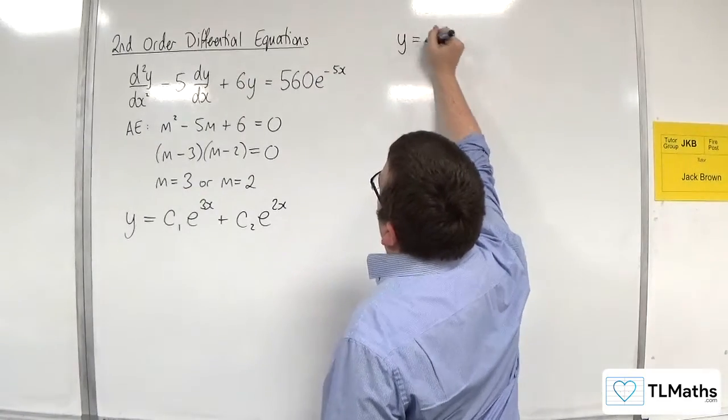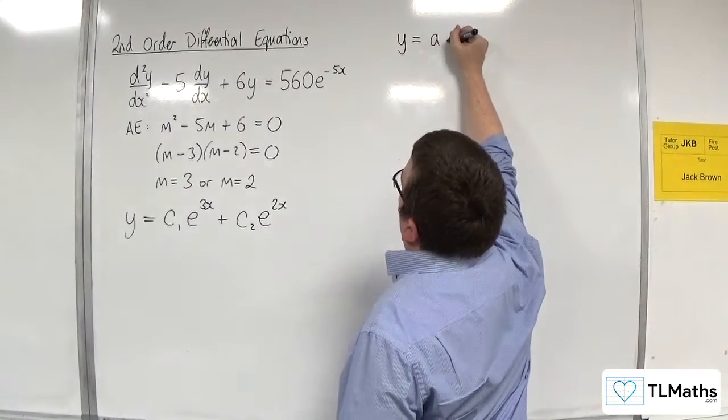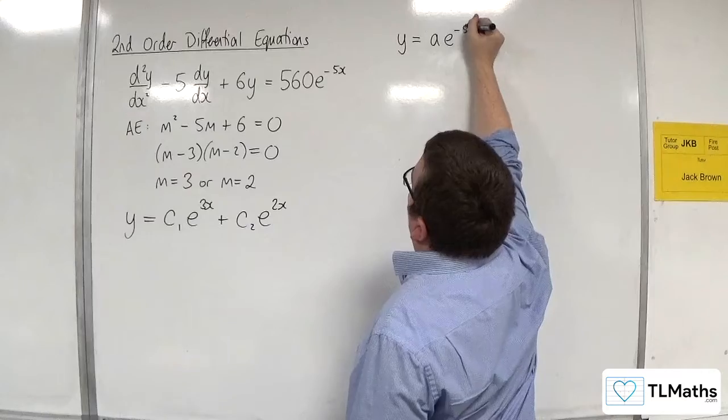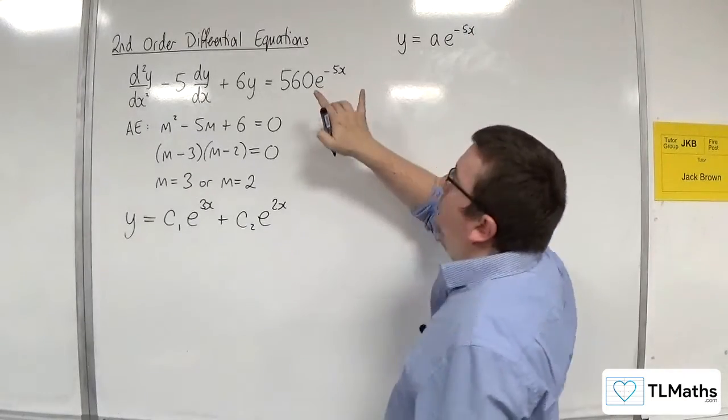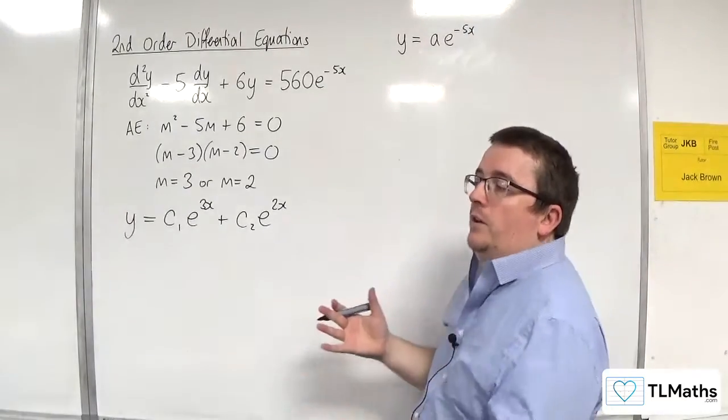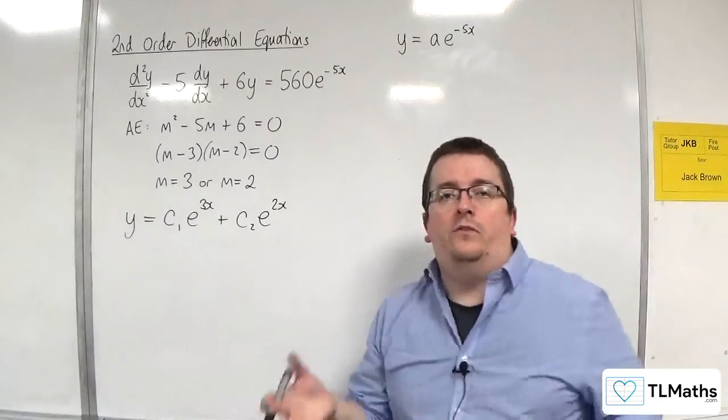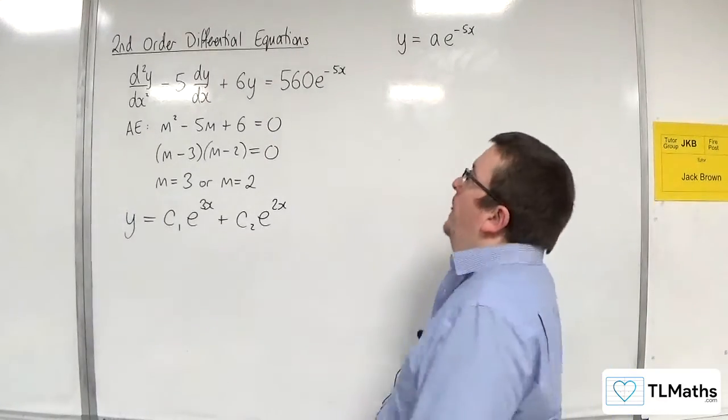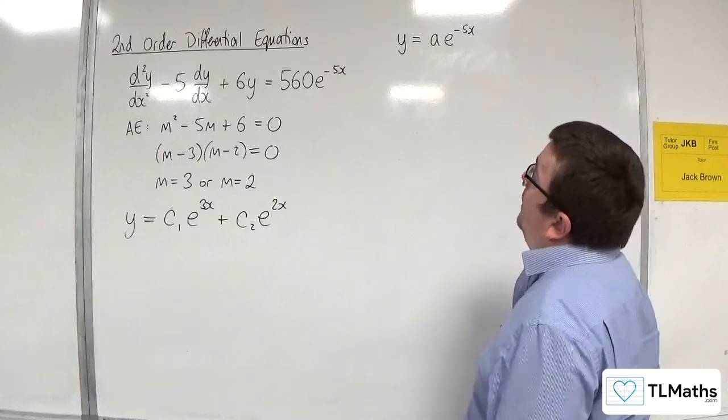Well, it makes sense that it is some multiple of e to the minus 5x, seeing as that's what we've got on the right-hand side, and when I differentiate e to the minus 5x, I get multiples of e to the minus 5x. So it stands to reason that this should work out.